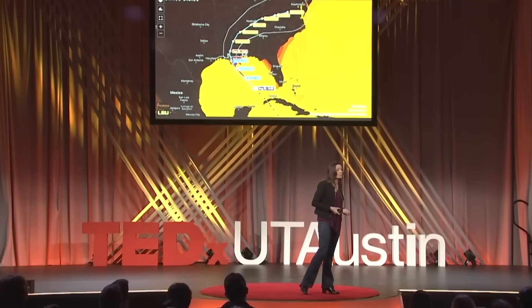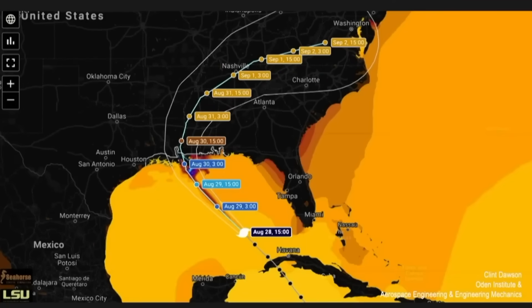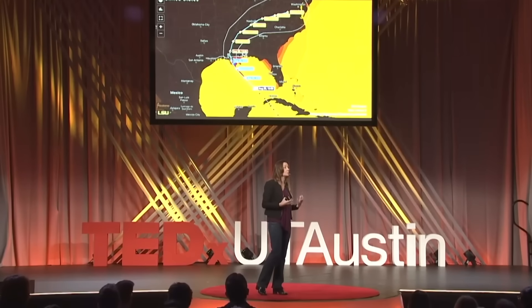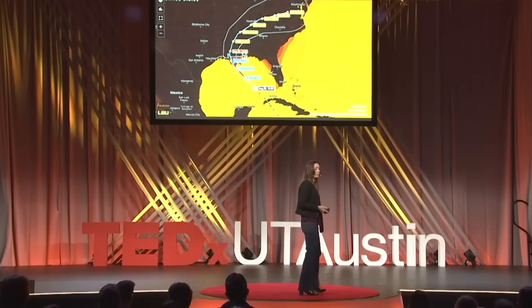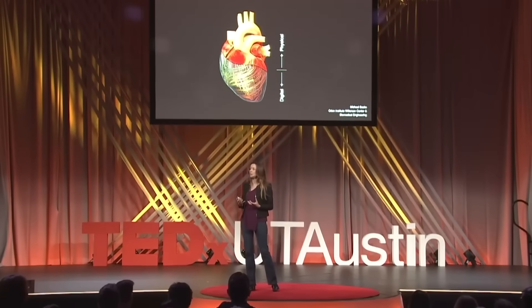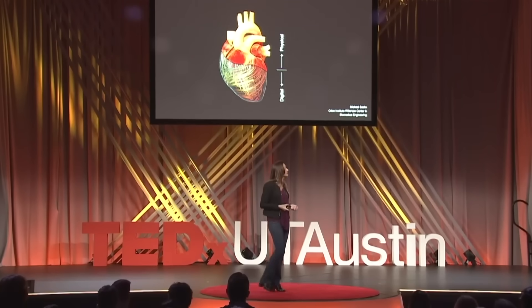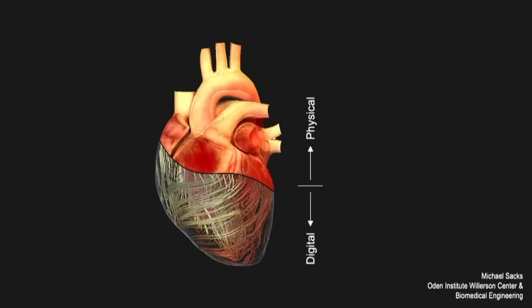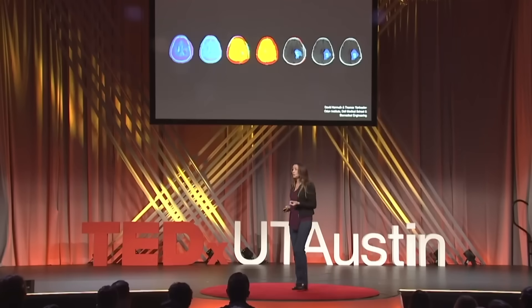We also see the work of Clint Dawson in building a digital twin of the Gulf Coast, combining powerful physics models with all kinds of data, focused on making storm surge modeling for hurricanes even more accurate — again in support of critical decision-making. And in medicine, digital twins have such a role to play in realizing the promise of personalized medicine. We see the work of Michael Sachs from our Odin Institute Willison Center moving towards patient-specific personalized heart care, and the work of Tom Yankeelov and David Hormuth, also in the Odin Institute and working with Dell Medical School and biomedical engineering, in building digital twins for cancer patients.